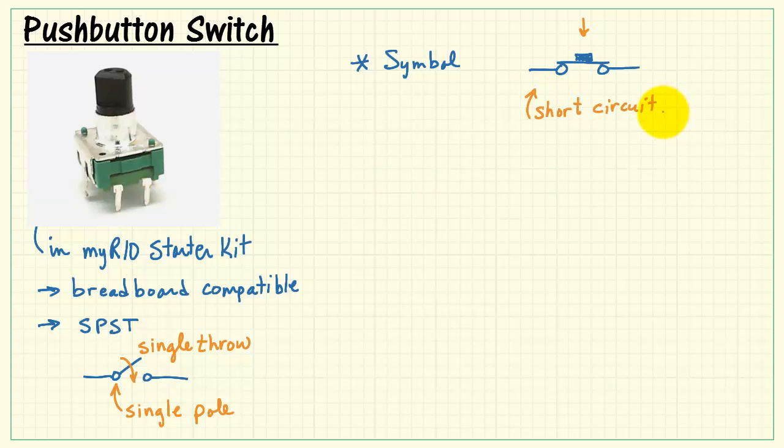When pressed, you have a short circuit. Ideally, you would have zero ohms between the two terminals. When the push-button is released, you have an open circuit with an ideal value of infinite resistance.